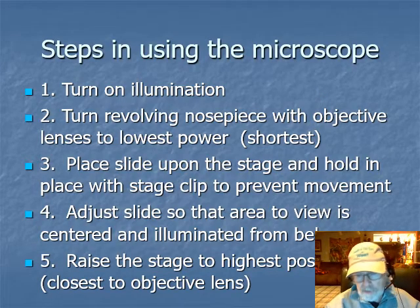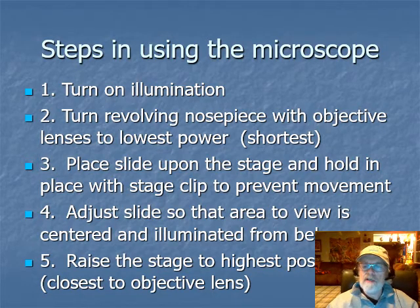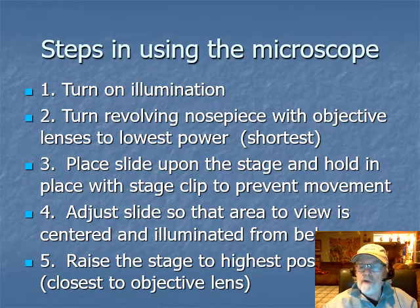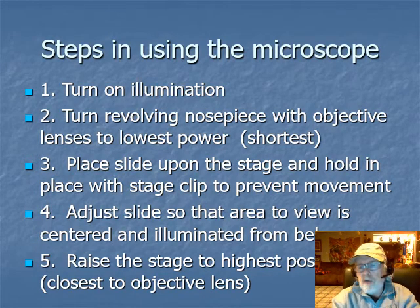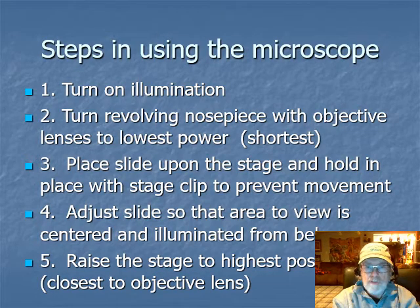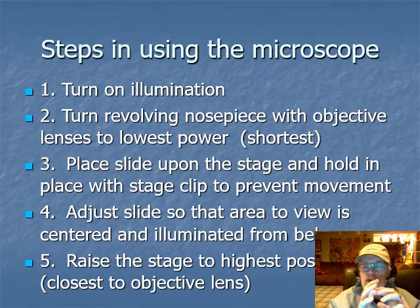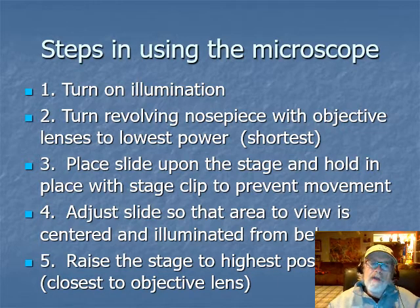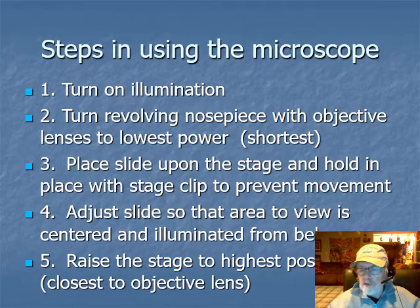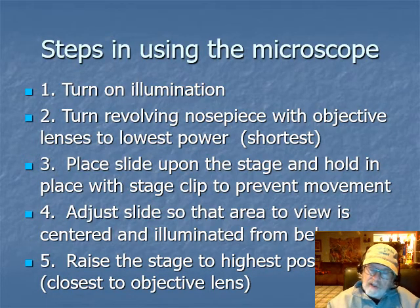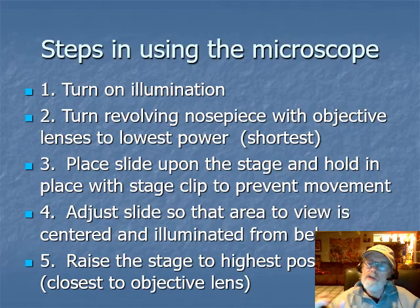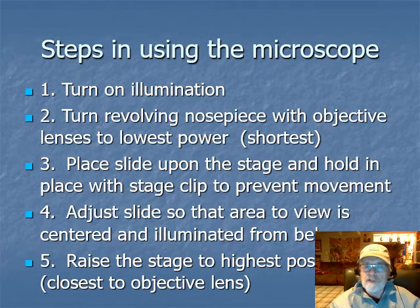Now how do we use the microscope? Again, the more you practice the better your skill. You get the microscope, put it where you need it, plug it in, and turn on the illumination. Then look through the oculars and move them according to your pupillary distance until you have one circular field of vision. Take the revolving nosepiece and put it to the lowest power objective - you should always start looking at the lowest power and then move up from there.